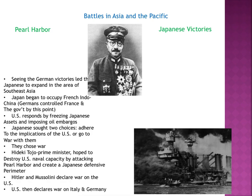The Japanese saw it as two choices: either adhere to what the U.S. was doing and stop due to lack of resources, or go to war. In the eyes of the Japanese, war was the best option — they actually thought they could win. Hideki Tojo, the Prime Minister, planned to destroy U.S. naval capacity by attacking Pearl Harbor and create a Japanese defensive perimeter.